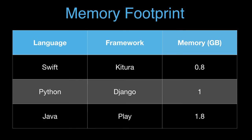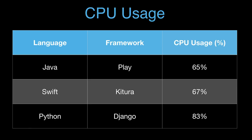Memory footprint — another area where Swift really shines. Under the exact same load as the previous database test, the peak memory usage is about 800 megabytes. Python is relatively close, but Java is way up there — you have to use more memory in Java to get the same result. Keep in mind this is peak, not average; at the lowest this was actually about 150 megabytes. CPU usage: under the same workload, a lower CPU usage is good because it means you have more overhead to do more stuff. Swift is not quite there yet, but very, very close.